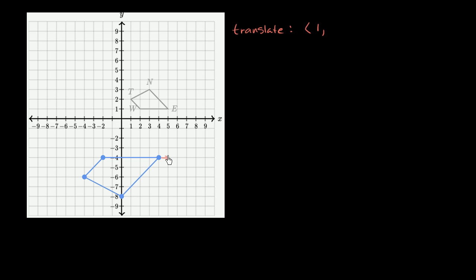And in the y direction, we're going to go up by — we're going to go from negative 4 to 1. So we're going to translate by 1, 5. And so that's going to put our figure — that's going to put our figure someplace like this. So that point is going to be right over here. Everything is going to go in the x direction by 1, and then 5 in the y direction. So this line is going to now look like that.